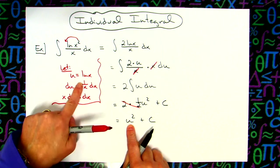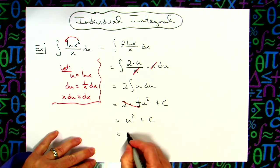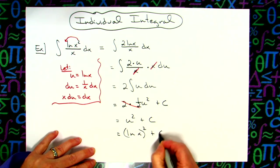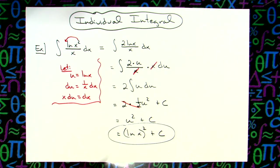Last step would then be to replace the u with what you said it was equal to. So natural log of x quantity squared plus c. A little bit more work with some algebra steps here, but still basically just a basic u-substitution integral which would commonly be found in the calc 1 class.